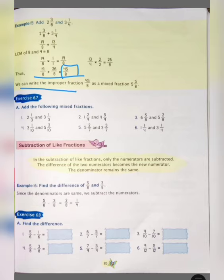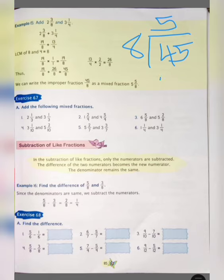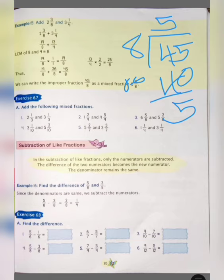Now we can write the improper fraction 45 upon 8 as a mixed fraction: 5 and 5 upon 8. You can do it like this — divide 45 by 8. We have the quotient here, the remainder here, and the denominator here.